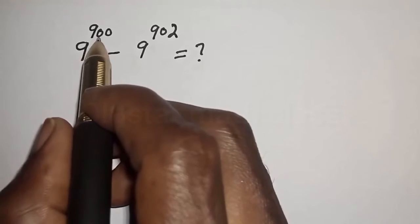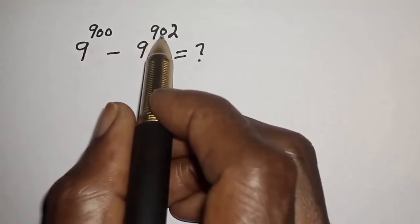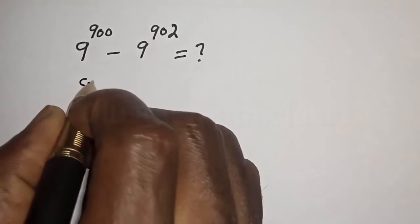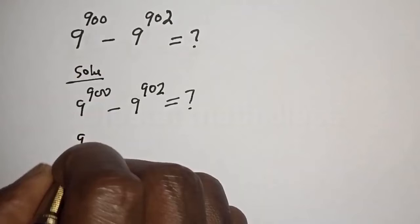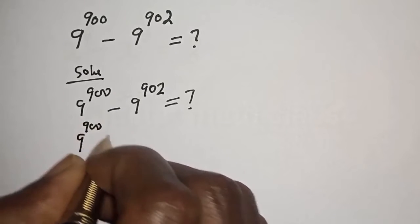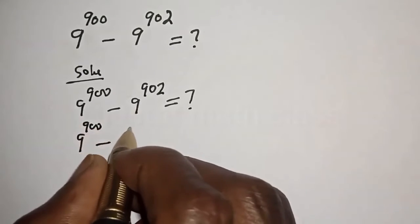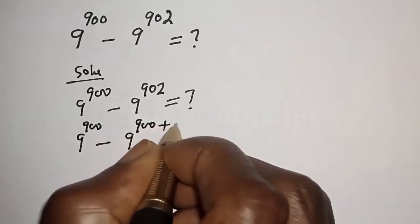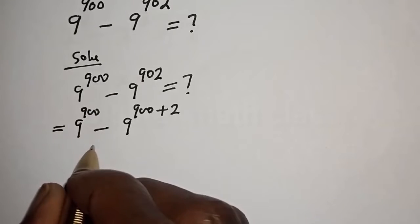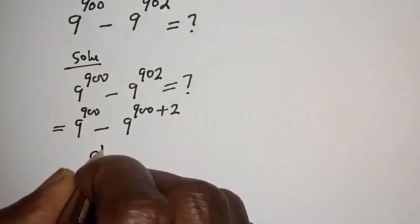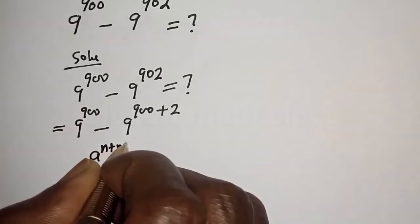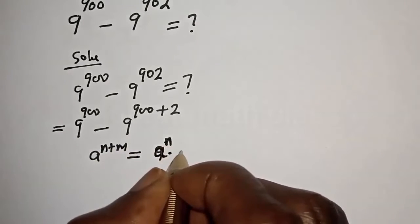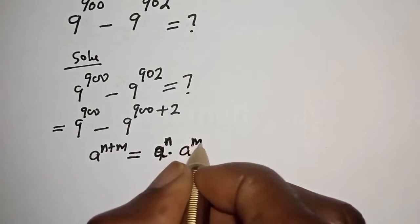How to simplify 9 raised to power 900 minus 9 raised to power 902. We can rewrite 9 raised to power 902 as 9 raised to power 900 plus 2. Using the rule: a raised to power n plus m equals a raised to power n multiplied by a raised to power m.